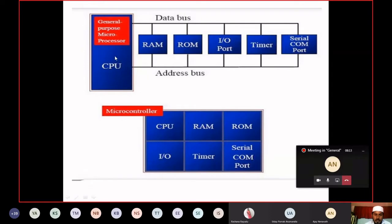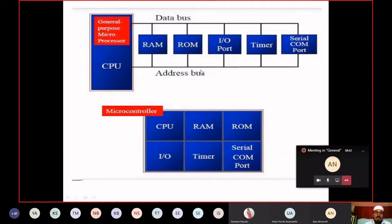Our processor is fabricated on a chip, and RAM, ROM, input-output port — all are external to our IC. They are connected to this chip externally with the help of buses — data bus and address bus. CPU, fabricated on a chip, is connected to RAM, ROM, and input-output port with the help of address bus. This is regarding the processor.